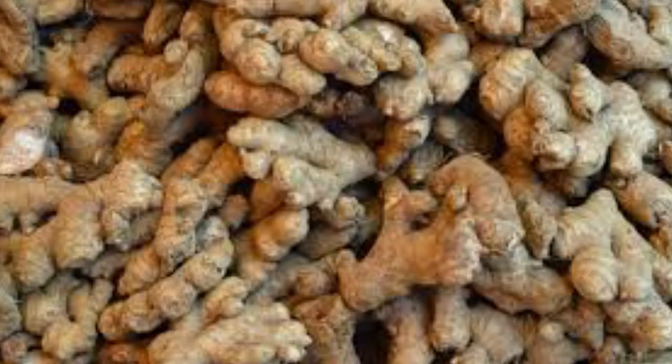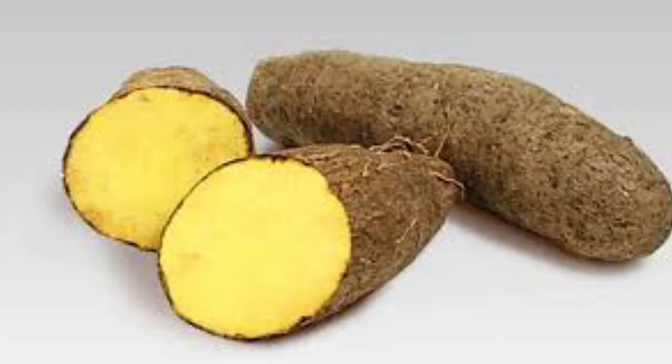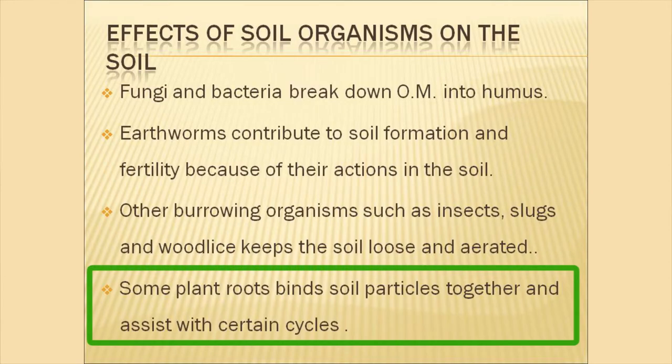For example, a crop such as carrot has a taproot system that benefits from loose soil. Tubers like yam also grow well in loose soil. Some plant roots bind soil particles together and assist with nutrient cycles such as the nitrogen cycle. Plants such as legumes have nodules on their roots that add nitrogen to the soil over time.